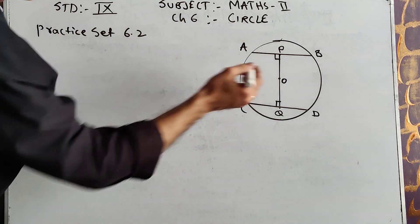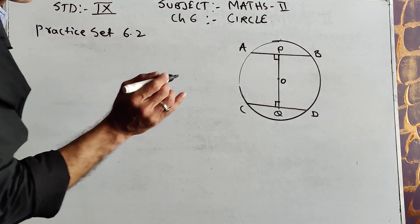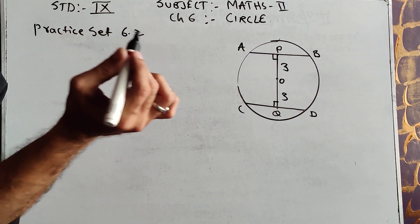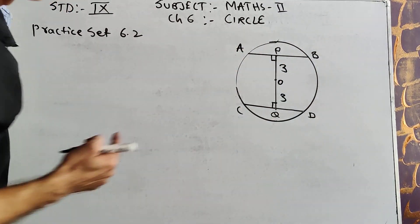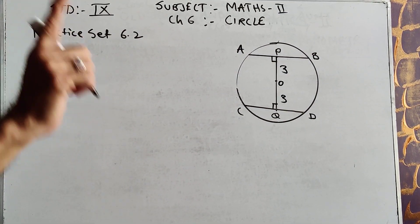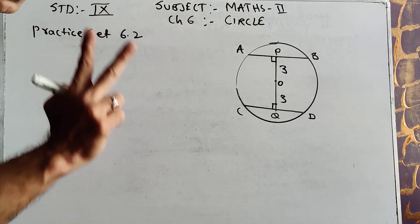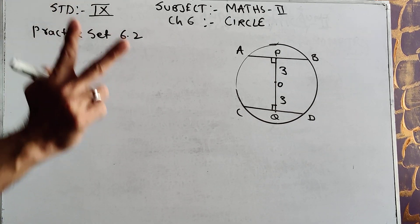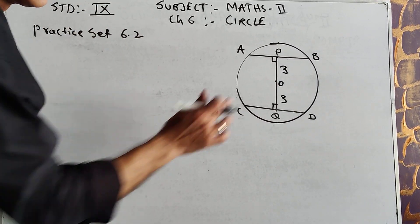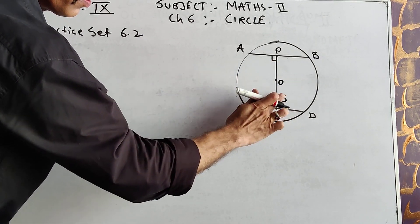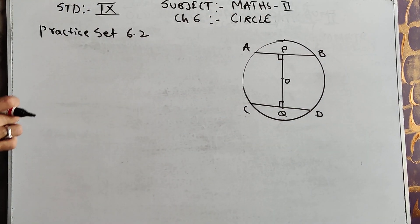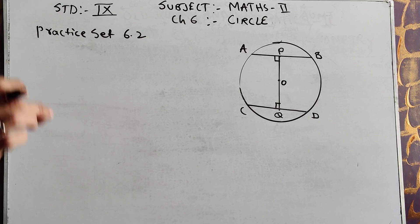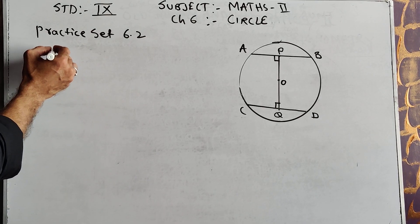Please keep in mind: if two chords are congruent, then the distance from the center is the same — they are equidistant from the center. OP is equal to OQ. For example, if OP is 3, then OQ is also 3, because the chords are congruent. By using this application of the theorem, we are going to solve Practice Set 6.2, sum number 1.